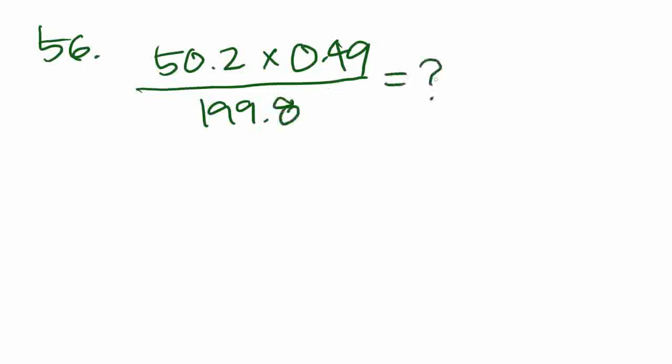Number 56, of the following, which is the closest approximation of, oh, and then they have this horribly complicated problem. 50.2 times 0.49, 199.8. Now, whenever you see a problem like this, you have to remember what the goal of the GMAT is. The goal of the GMAT is not to make sure that you're a human calculator. They're not trying to make sure that you can do all the computation correctly. And they're not going to design questions that require you to spend more than three minutes on it. The GMAT tests are your concepts and how good you are at finding shortcuts. So whenever you see a convoluted problem like this, there's probably a shortcut somewhere that you can figure out.